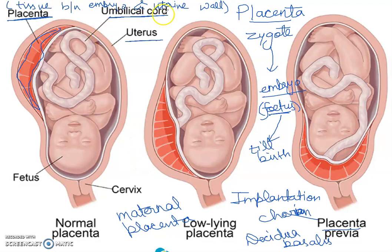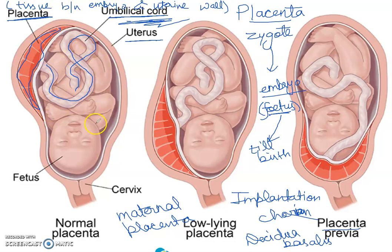Next, let's discuss the umbilical cord. It is a long and thick cord that runs between the fetus and the placenta. You can see here — this one is the developing fetus and this is the placenta. This cord will connect the developing fetus and the placenta, and the placenta is attached to the uterus.